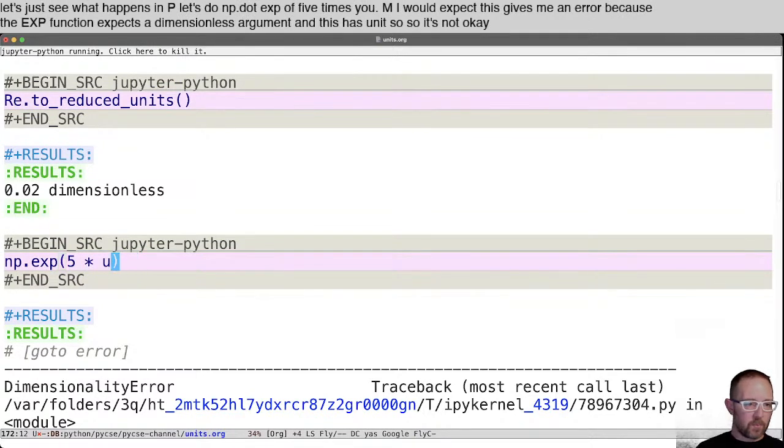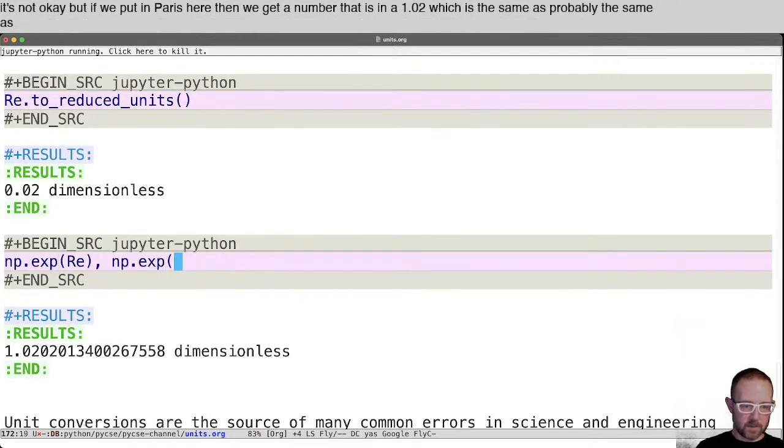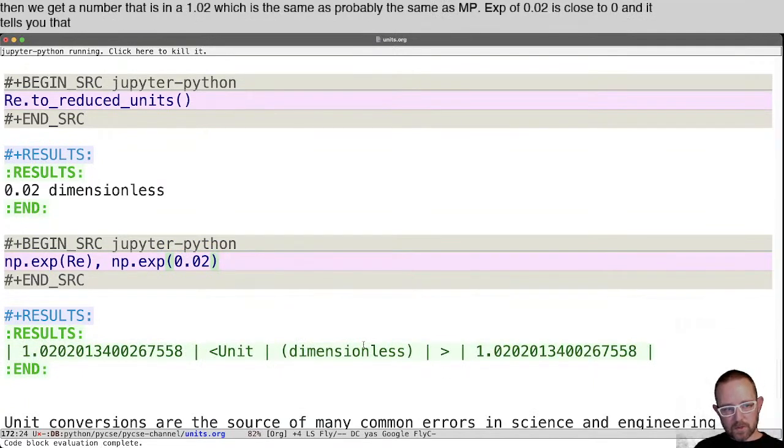But if we put in our E here, then we get a number that is you know, 1.02, which is the same as probably the same as NP dot exp of 0.02. It's close to zero and it tells you that it's dimensionless.